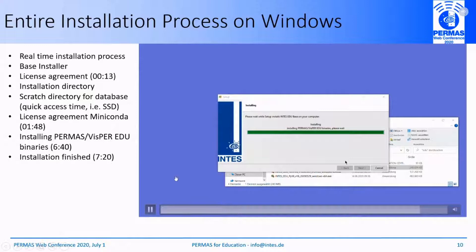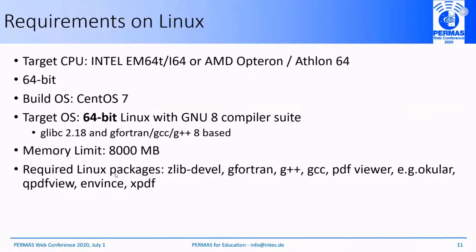The next supported operating system is Linux. The target CPUs are Intel and AMD processors; 64-bit operating systems are supported. The build operating system is CentOS 7, and the target operating system is any 64-bit Linux with a new compiler suite based on GLIBC 2.18 and compiler suite ICC, ICPC, and ICPC. Again, we have a memory limit and some requirements for packages like compilers, and of course a PDF viewer — for example Okular, QPDFView, Evince, or XPDF.